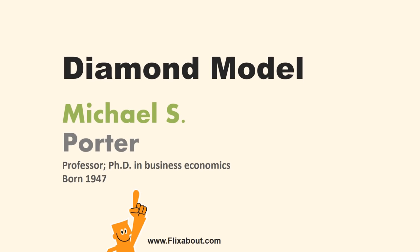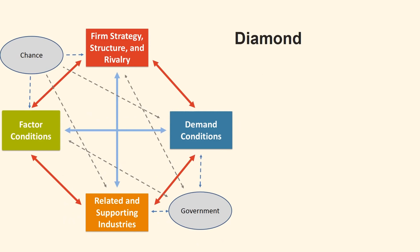Michael Porter's The Diamond Model was published in 1990 in his book The Competitive Advantage of Nations. It is a model that can help us understand why a nation becomes the home base for successful international competitors in a particular industry and other nations don't. He argues that the old theories proposed by Adam Smith and David Ricardo are not sufficient to explain competitiveness between technology advantage in the nations of today.